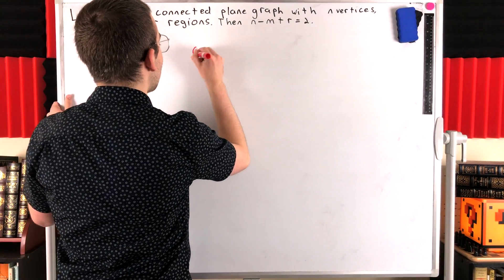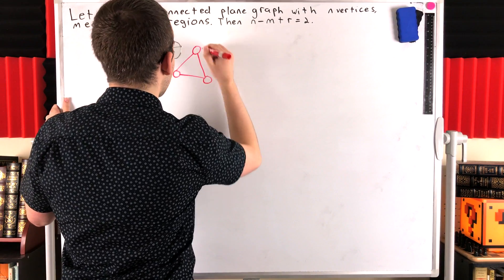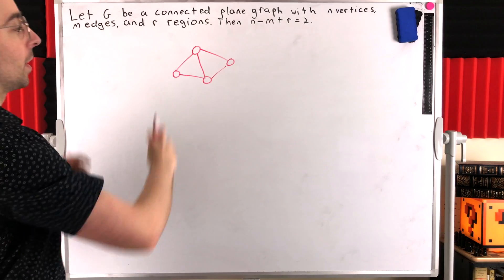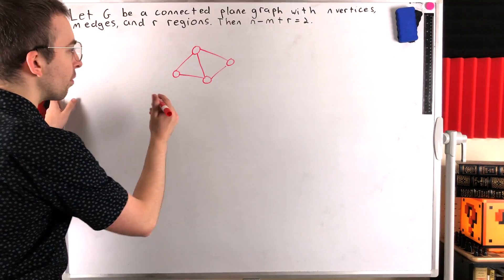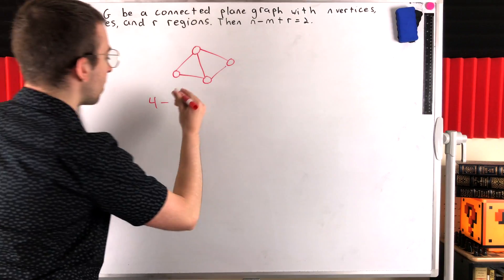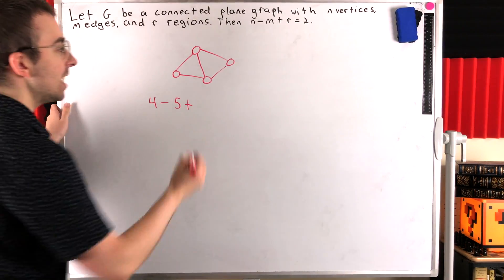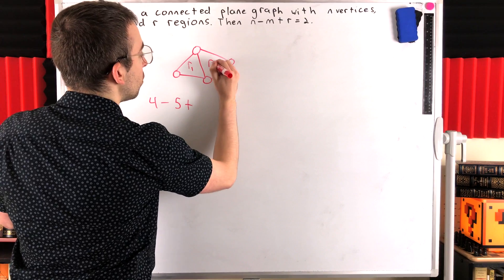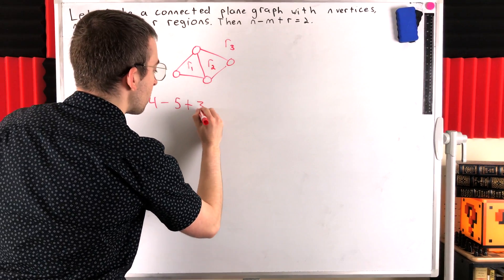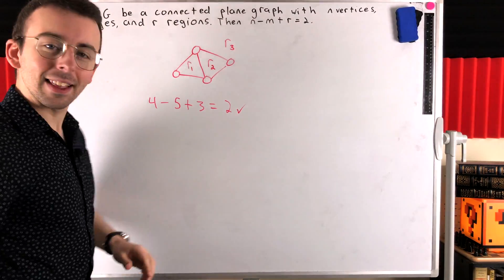Let's see one quick example of this result. Here's a planar graph. It's got four vertices. How many edges does it have? One, two, three, four, five — five edges. And how many regions does it divide the plane into? It's got one, two, three regions. So three regions: four minus five plus three is two. Isn't that beautiful?